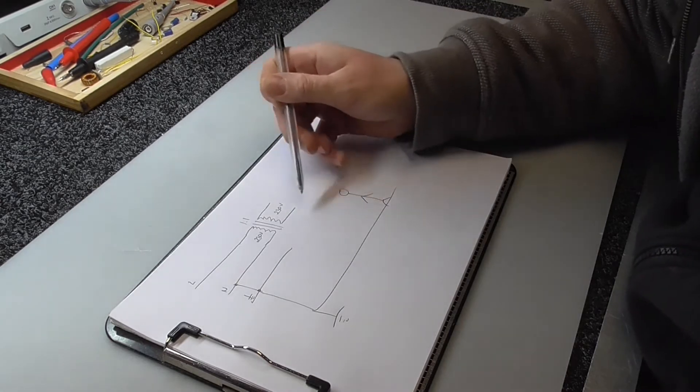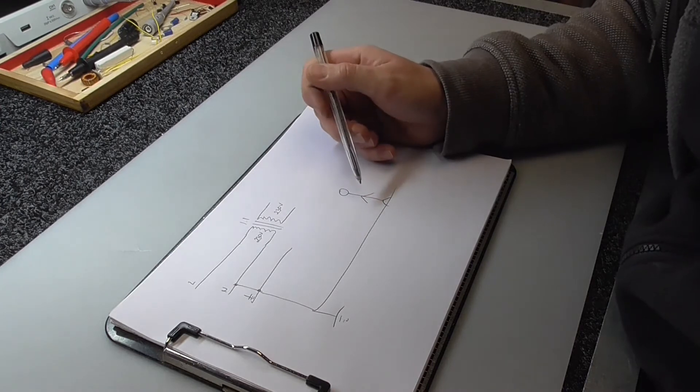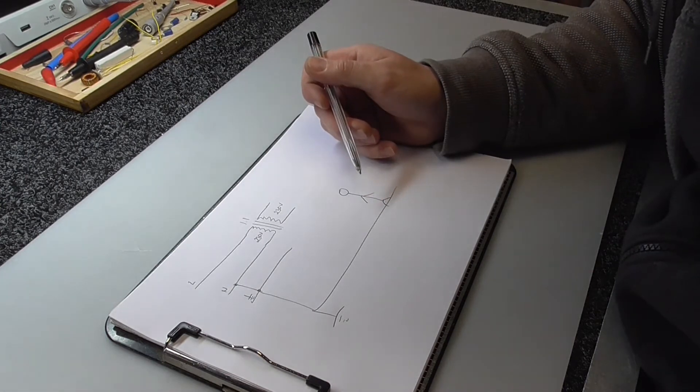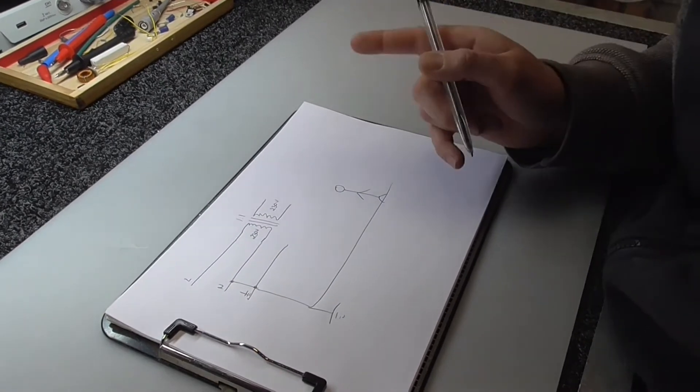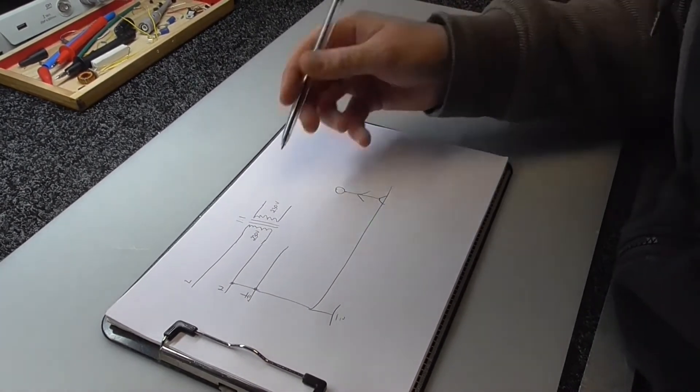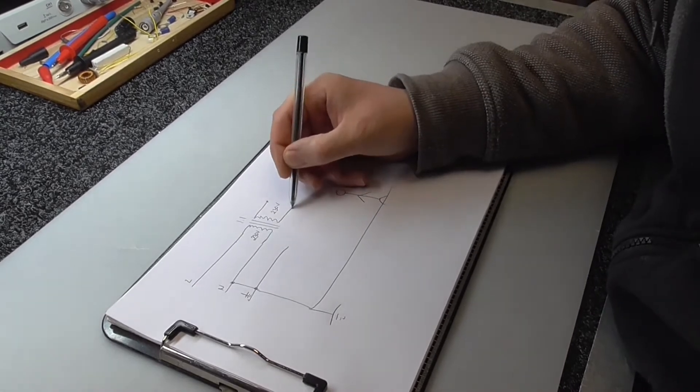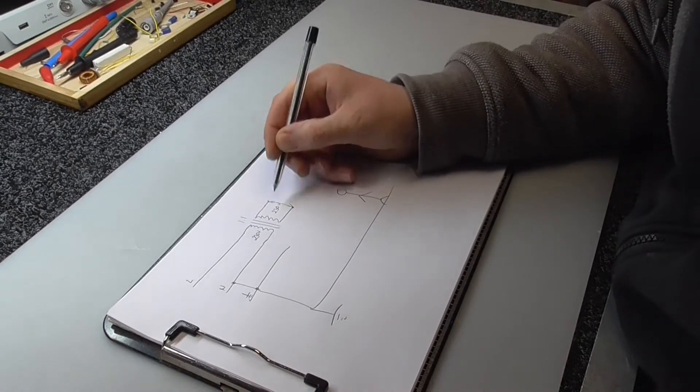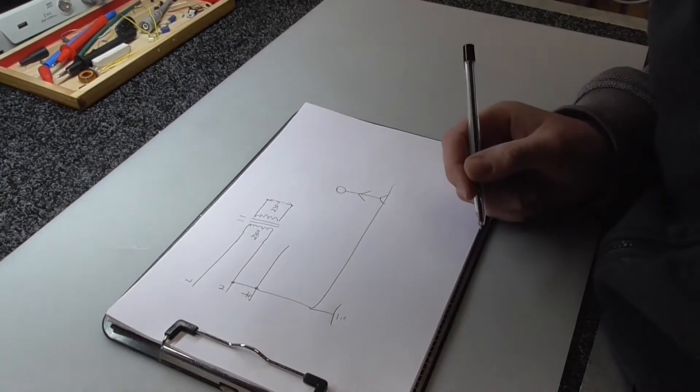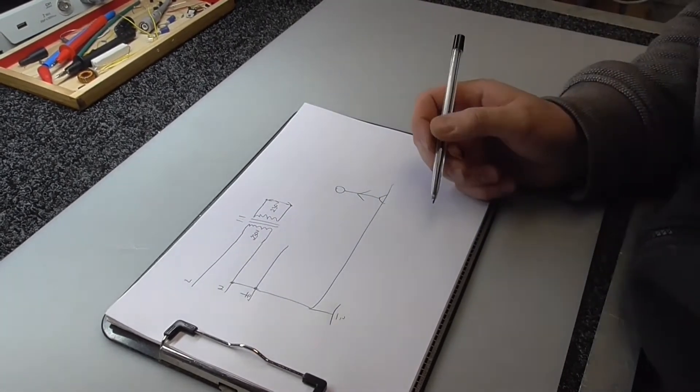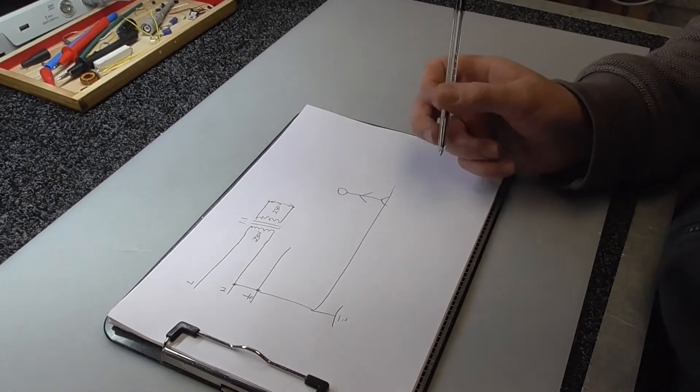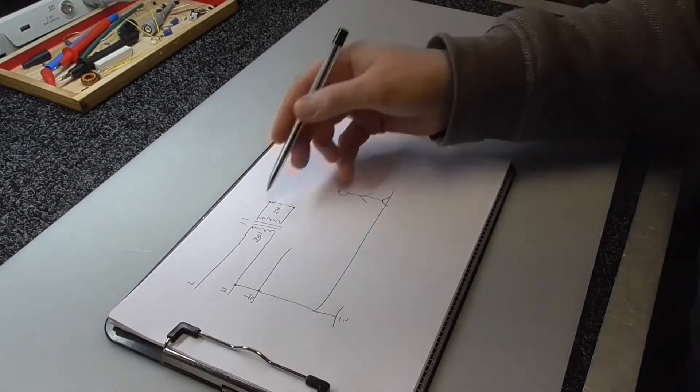But this is very important: we can only touch one wire at a time, because between these two wires there's 230 volts. So if we touch both, we will get electric shock, and this is quite dangerous.